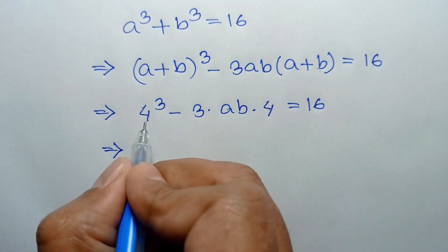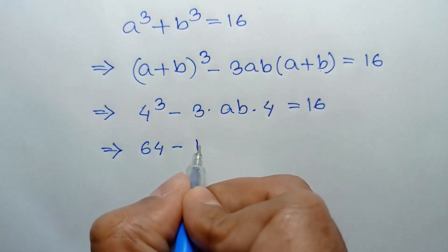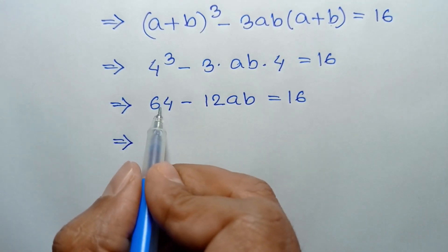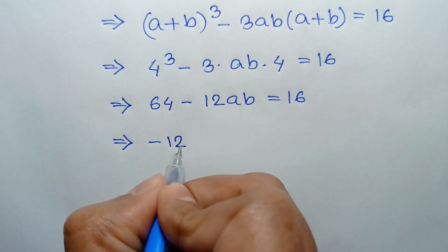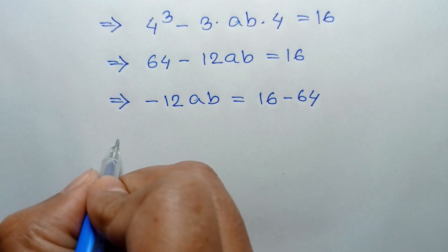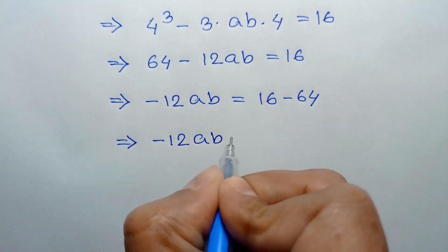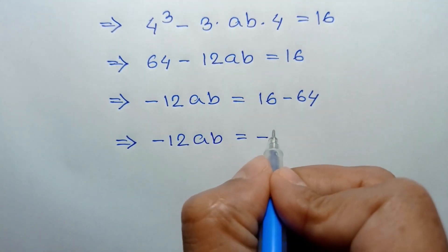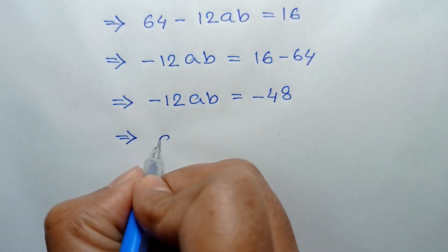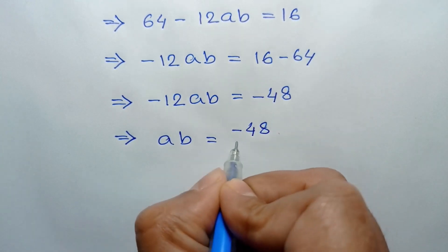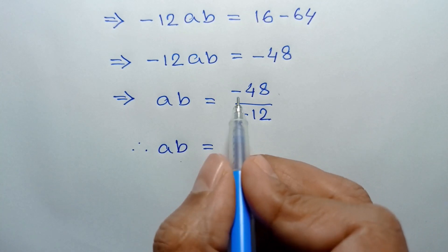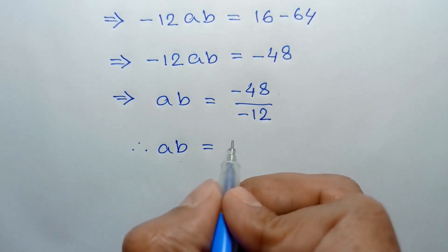4 cube is 64, minus 3 times 4 is 12ab, equal to 16. Taking 64 to the right side, we have negative 12ab equal to 16 minus 64, which is negative 48. Dividing both sides by negative 12, ab is equal to negative 48 over negative 12. The negatives cancel out and 48 over 12 is 4, so the value of ab is equal to 4.